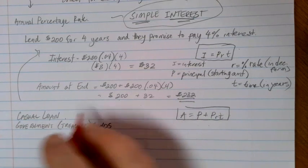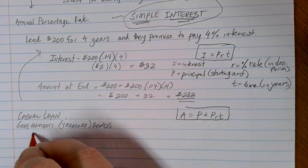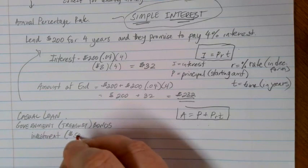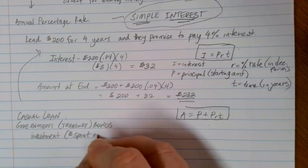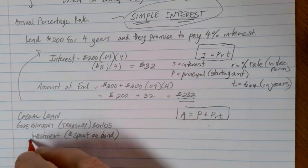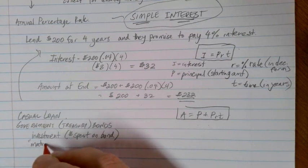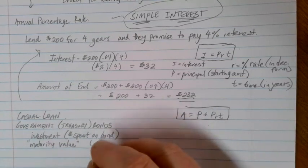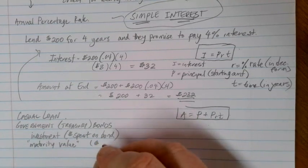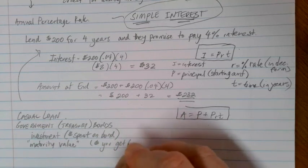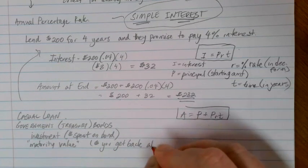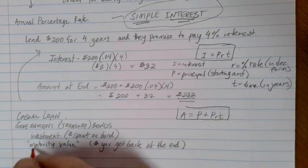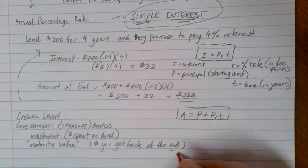When we talk about a treasury bond, we have our initial investment, what we purchase it for, the amount of money you spend on the bond. And then we're going to have what we call a maturity value, which is the amount that you'll get back at the end. And of course, that end is going to be some time in years.